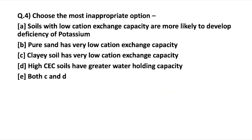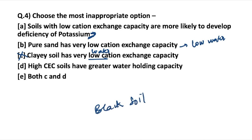Choose the most inappropriate option. 'Soils with low cation exchange capacity are more likely to develop deficiency of potassium' — correct, since potassium is a common cation. 'Pure sand has very low cation exchange capacity' — correct, as sand has low water retaining capacity. 'Clay soil has very low cation exchange capacity' — this is incorrect, because clay soil has high cation exchange capacity. Black soil is an example, being clay in nature with high water retaining and high cation exchange capacity.